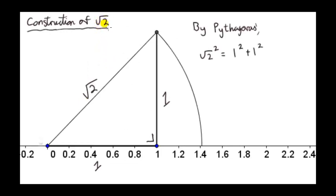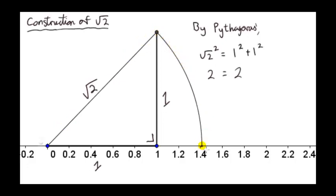Here is how we show the number square root of 2 on our number line. We construct a right-angled triangle whose two short sides are 1. By Pythagoras' theorem, we can see that the hypotenuse is the square root of 2 — if you square the hypotenuse, you get 2, which equals the sum of the squares of the other two sides. To show this on our number line, we use a compass: put the compass at 0, set it to a length equal to the hypotenuse, and draw an arc. That point is root 2.